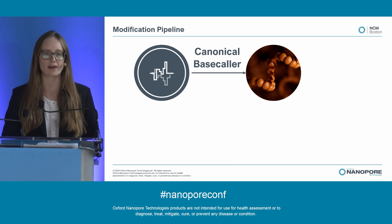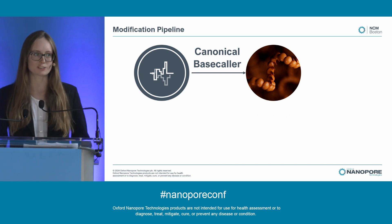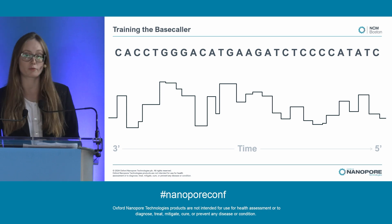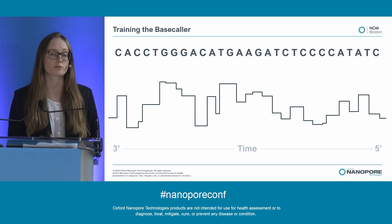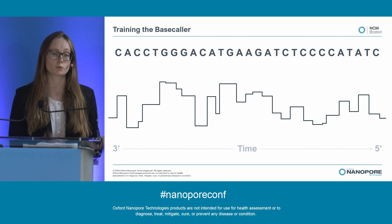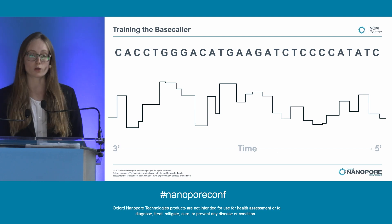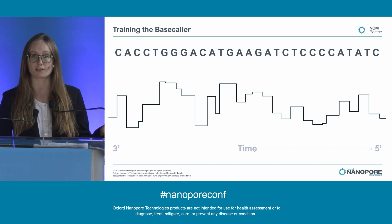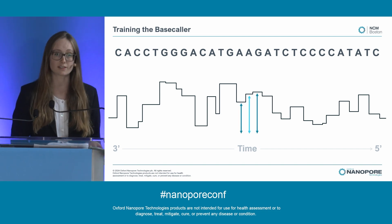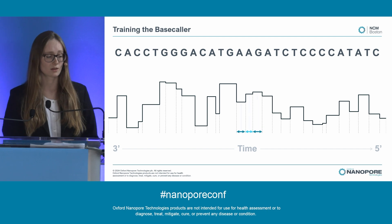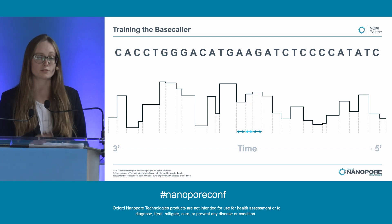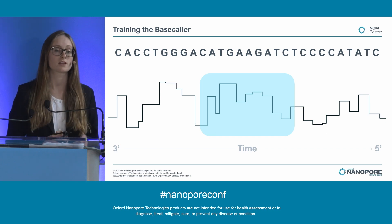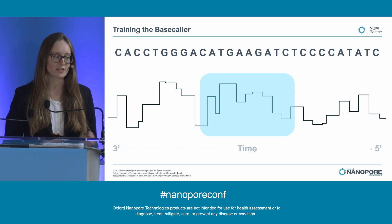So how do we prepare a canonical base caller for this pipeline? It all starts with training. We use supervised machine learning models, which means that when we train them, we provide them with signal that's labeled with sequence. The model can then use different features in the sequence to predict what the bases should be for a particular region. This can include the levels in the signal, the amount of time spent at different levels — what we call the dwells — and context information.